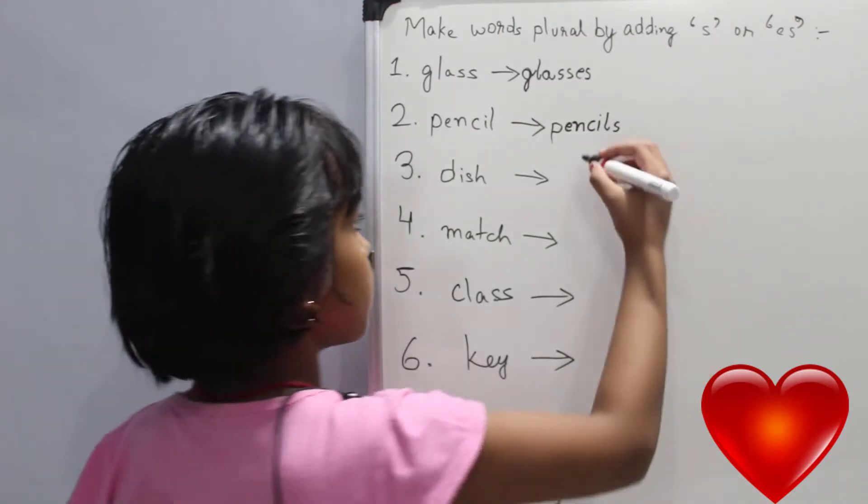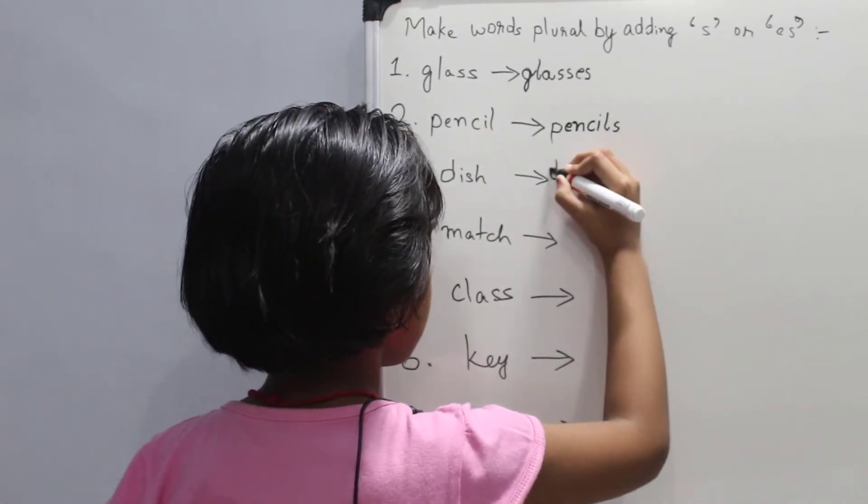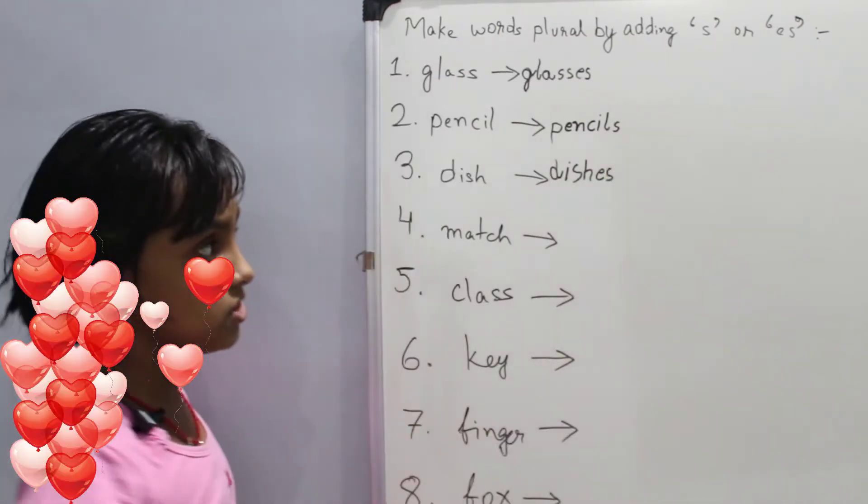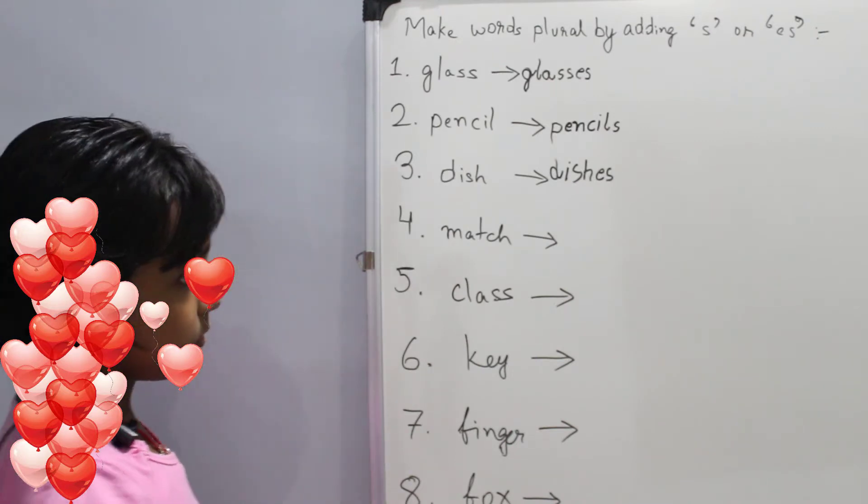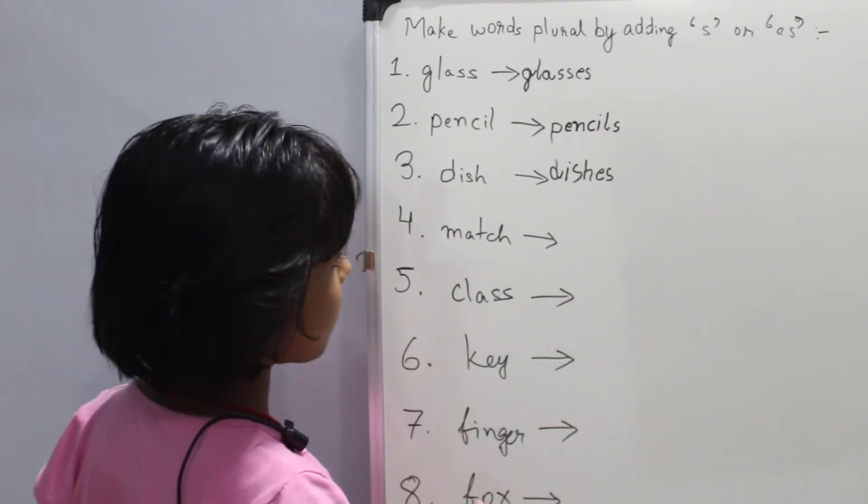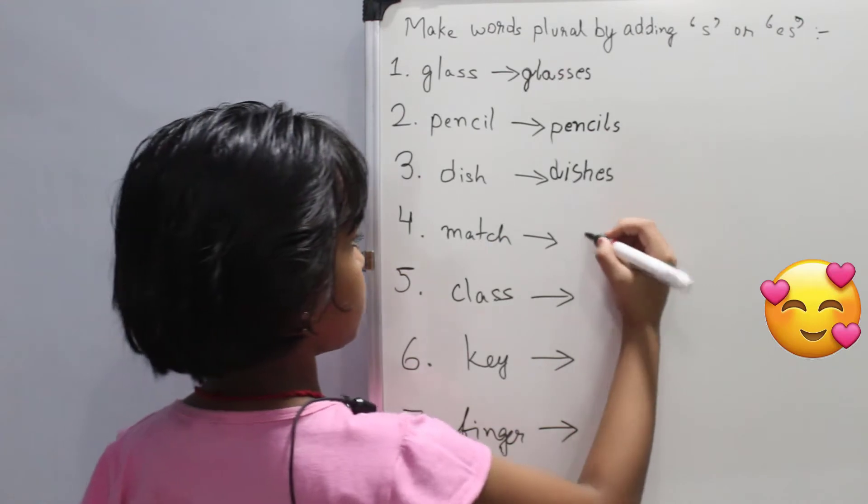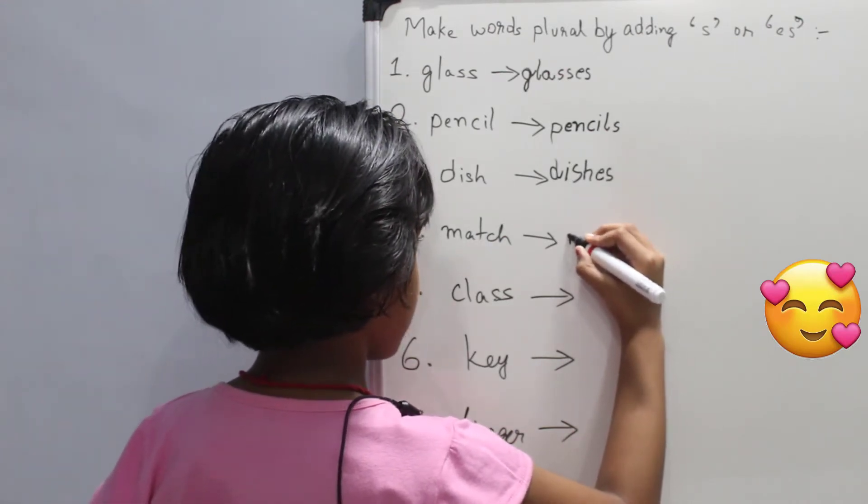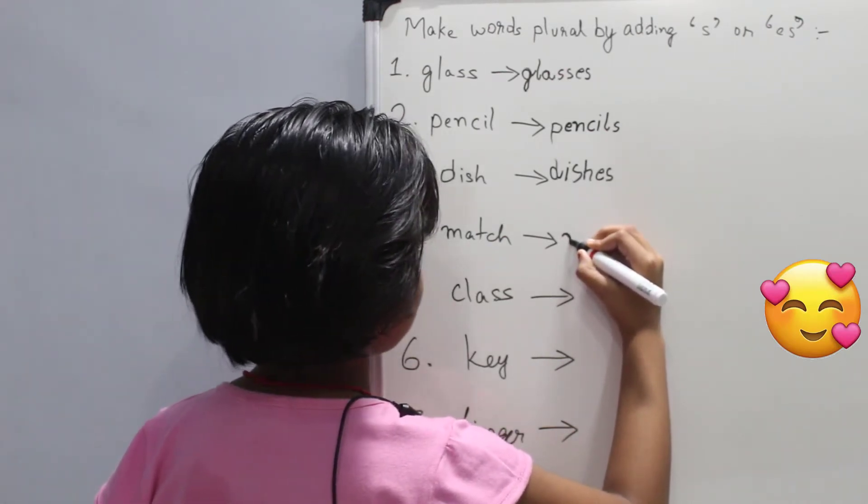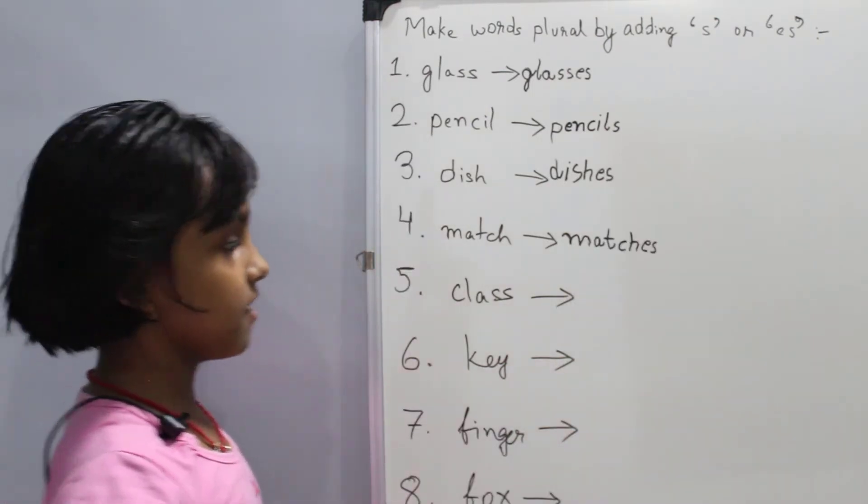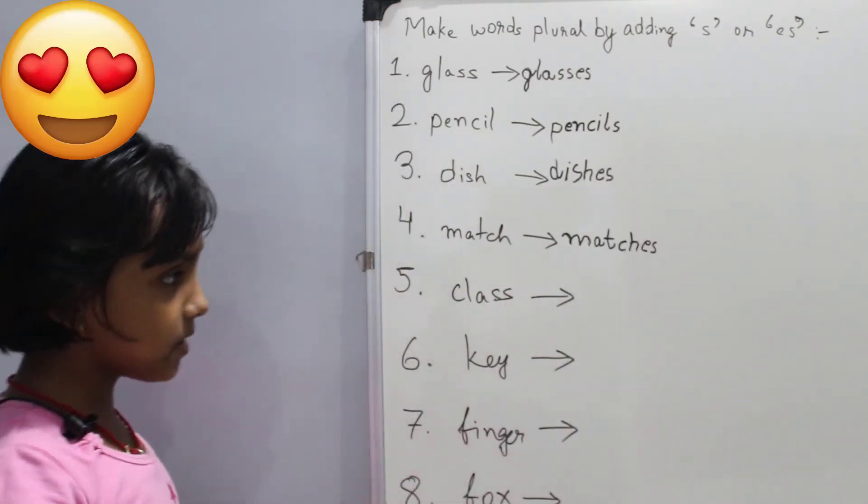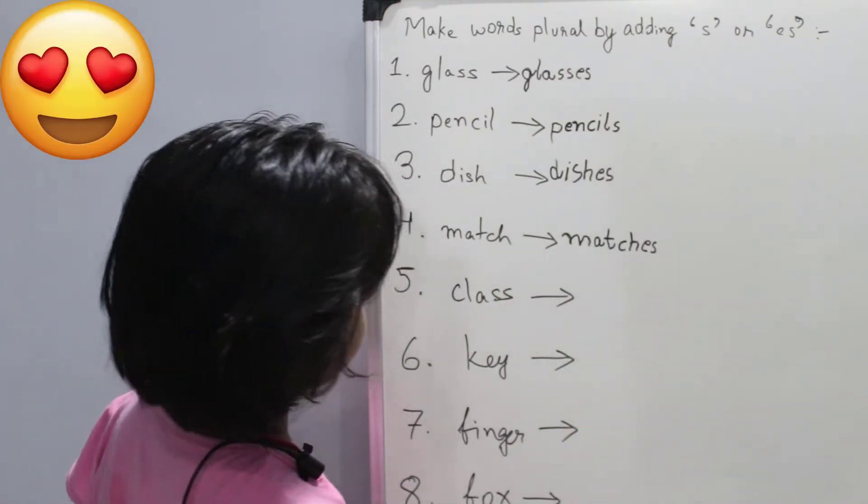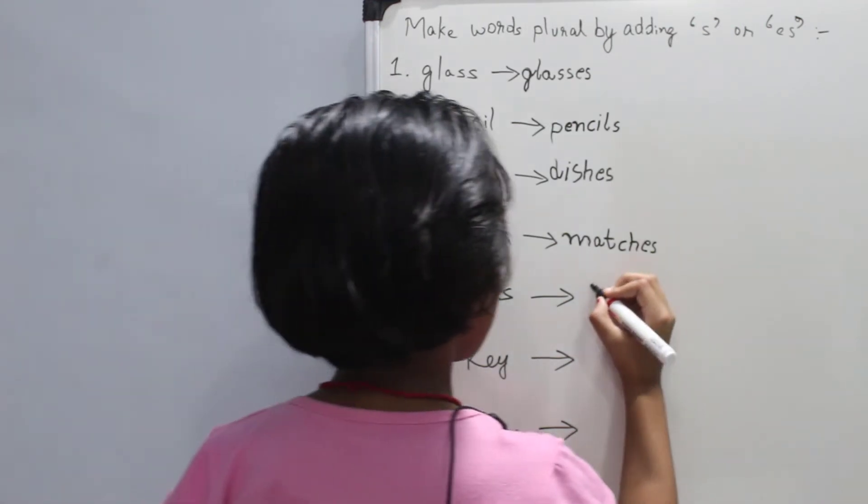So it will be dishes. So four number is match. So what will it be? Matches. Then five number is class. Classes.